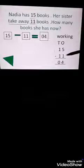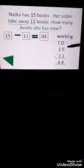First we have to solve the ones column. We have 5 minus 1. 5 minus 1 is equal to 4. In tens column, 1 minus 1 is equal to 0. So 4 books are left. I hope you will understand the concept well.